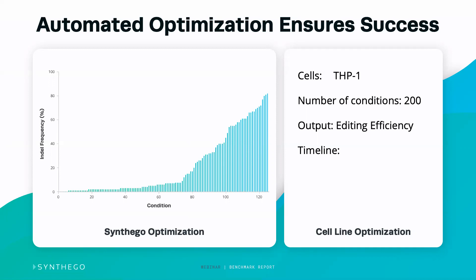Some people use transfection efficiency as a surrogate for editing efficiency. This may work for some cell lines, however, just because you have transfected cells doesn't mean you have edited cells. That's why we go one step further and actually look at what we're trying to measure, which is editing efficiency — and that is what we recommend as well. This gives us the benefit of being able to identify conditions that we may otherwise have missed, especially if we only did a handful of parameters when testing transfection efficiency.